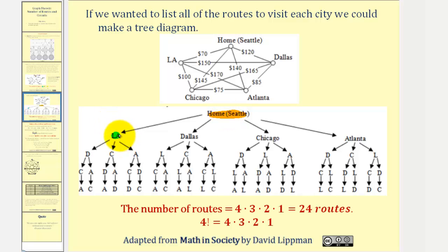notice how from LA there are three choices. So if we select Chicago, notice how there are two remaining choices. And if we select Atlanta, notice how there's only one choice left, which is Dallas. So again, as a tree, we can see all 24 routes.